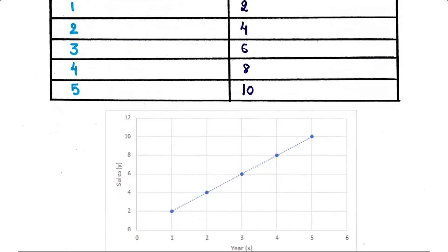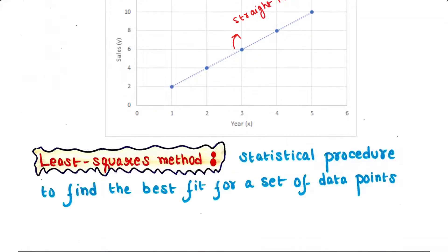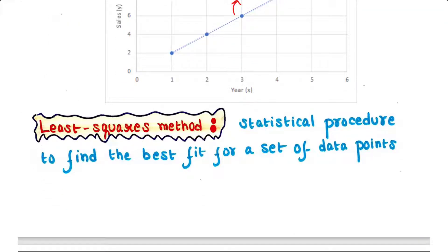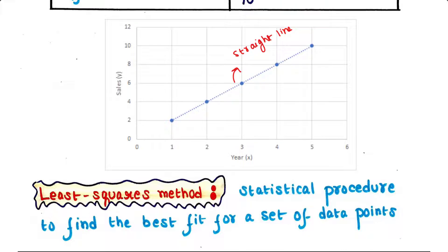If we plot these data on a graph we will get a straight line. If you didn't go through the last lecture I would highly recommend you to do so — the link is in the description box. The least squares method is a statistical procedure to find the best fit for a set of data points, meaning a line has to be drawn as close as possible to all the points.